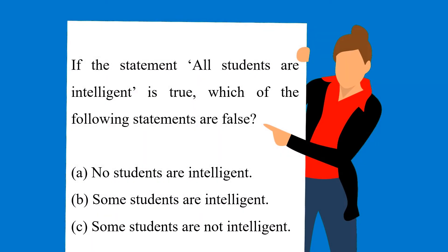The question is: if the statement 'all students are intelligent' is true, which of the following statements are false? Your options are: a. No students are intelligent, b. Some students are intelligent, and c. Some students are not intelligent.